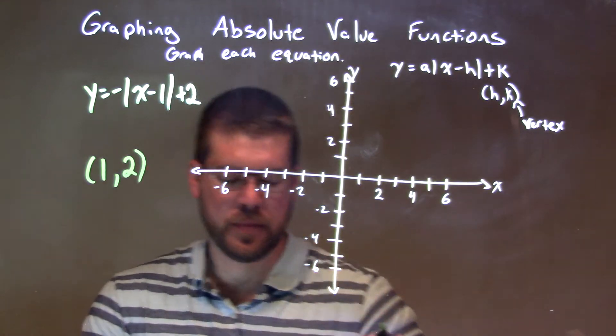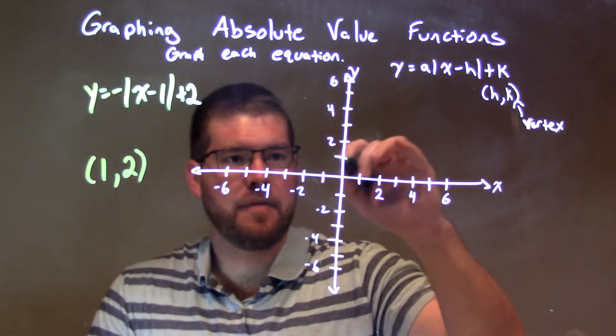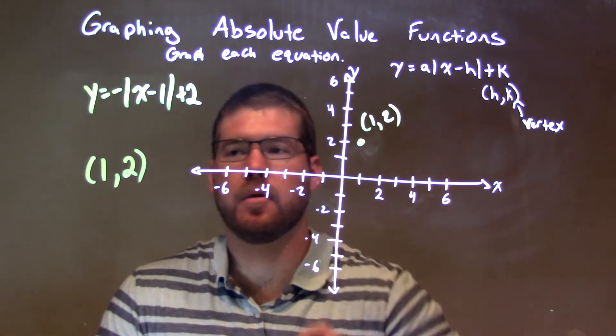That k value is just a positive 2. So we have a vertex of 1 comma 2. Graph that right here. 1 up 2. Boom. Got my vertex of 1 comma 2.